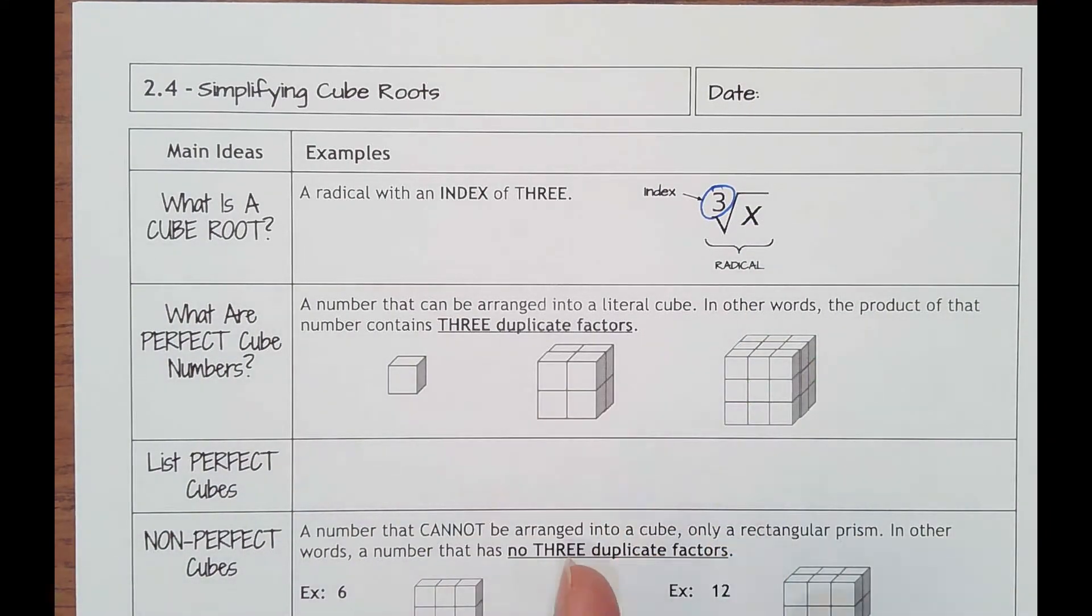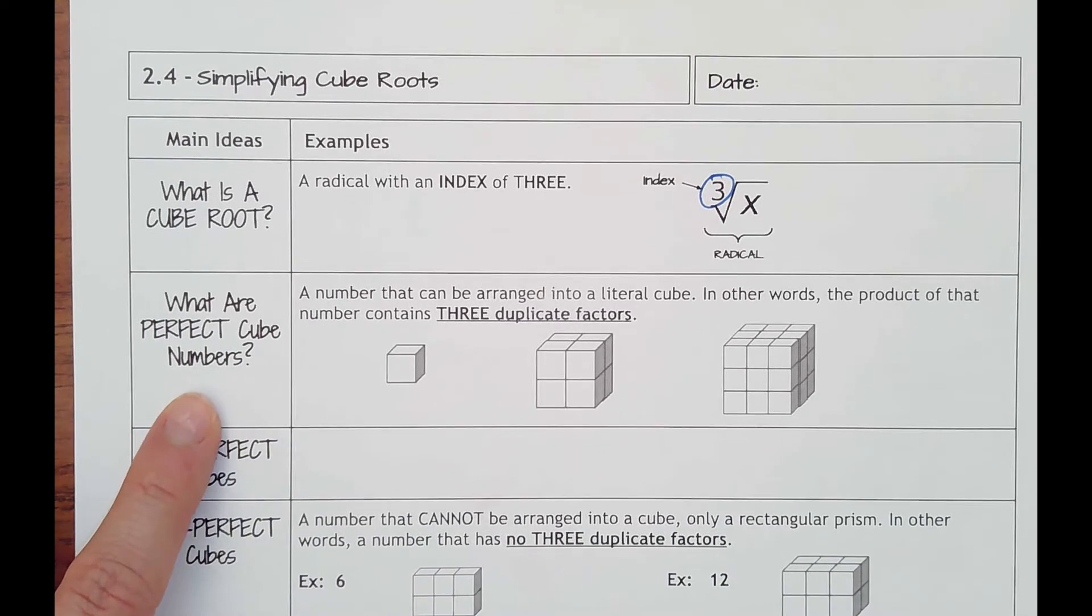It takes three of the same thing getting multiplied to be able to split it into one of them. Let's look at a visual example.